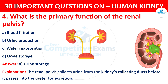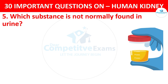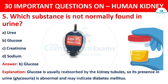Question 5. Which substance is not normally found in urine? Your options are: Urea, Glucose, Creatinine, or Sodium. The correct answer is B, i.e. Glucose. Glucose is usually reabsorbed by the kidney tubules, so its presence in urine — glycosuria — is abnormal and may indicate diabetes mellitus.